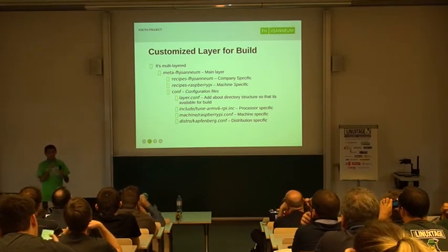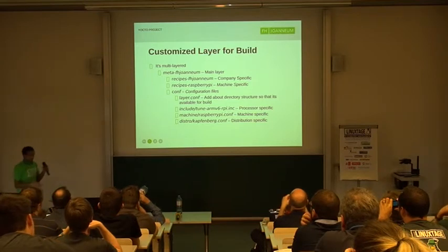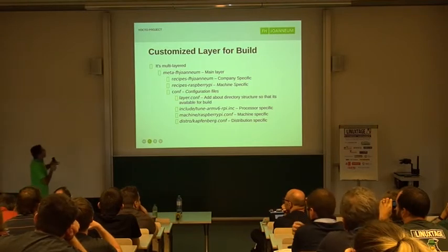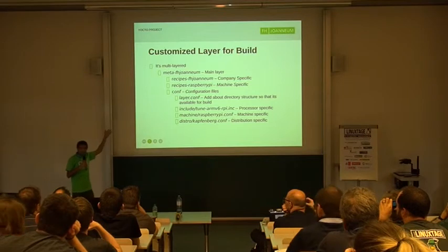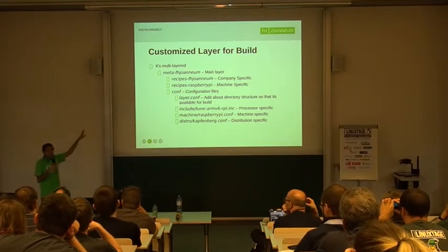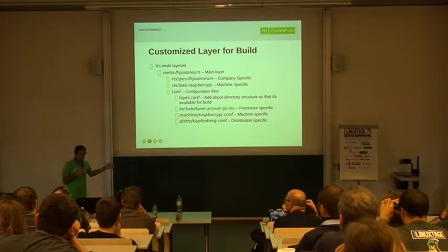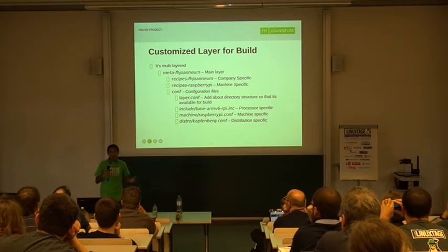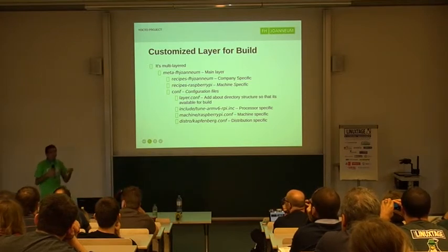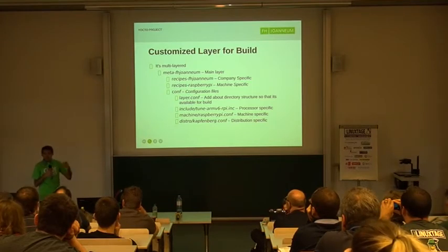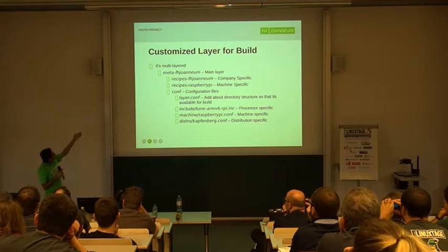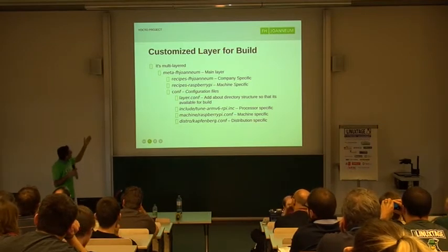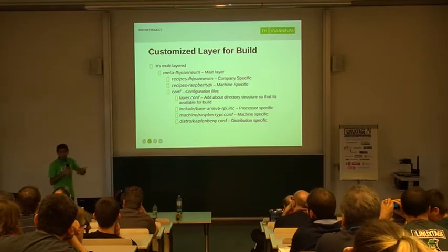This is a small overview of how the Yocto project itself works. Because I don't have my terminal here I cannot demonstrate it live. Suppose I study at Fionium and I decided to create a specific layer. The reason we create a specific layer is: we download the build system but we don't want to mess with it. It is always nice to create a specific layer for our own company or machine. So I create recipes related to Fionium in general and recipes related to Raspberry Pi, which I want to run on.